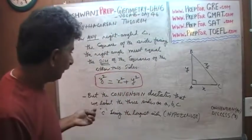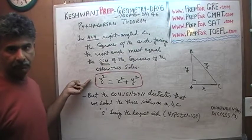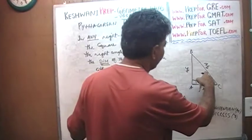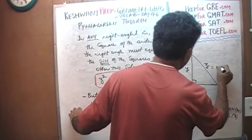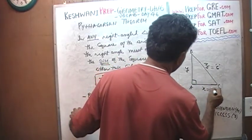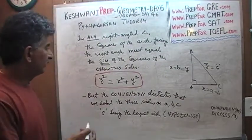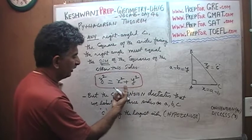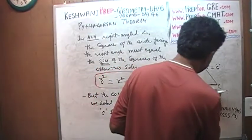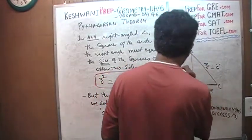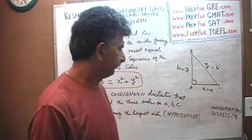Convention means tradition. We could call the sides X, Y, and Z — there is nothing wrong with it. It's just that instead of calling the longest side C, I'm calling it Z. The convention dictates that we call the three sides A, B, and C, with C being the largest side. It doesn't matter which of the other two sides you call A and which you call B, because they are being added. Whether it's A squared plus B squared or B squared plus A squared, the order doesn't matter.